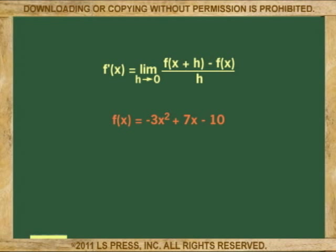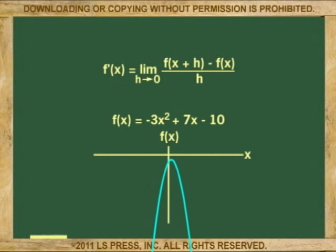The first example: the function of x equals negative 3x squared plus 7x minus 10. By now you should know this is a quadratic that yields the parabola shown here. By finding the derivative of this function, we will be calculating an equation to help us find the slope at any point of the parabola.